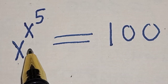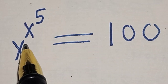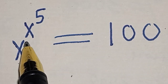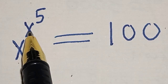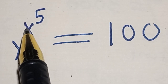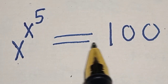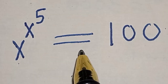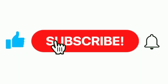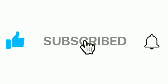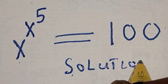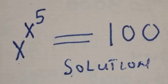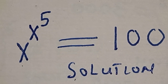Hello, welcome to Math Gist. In this class, we want to find the value of s from this equation: s raised to the power of s raised to the power of 5 is equal to 100.